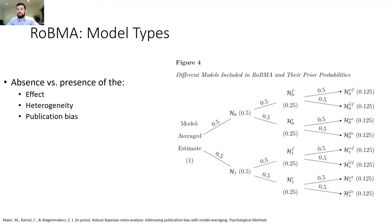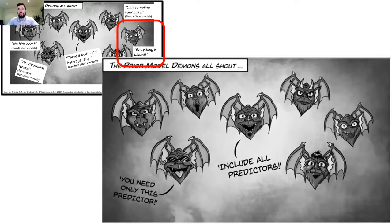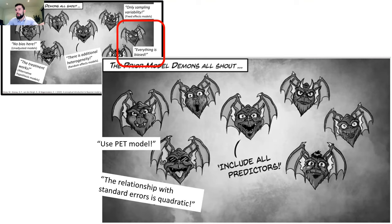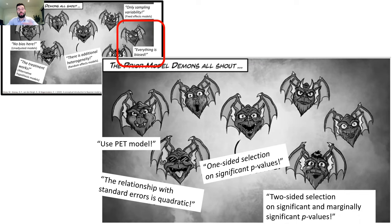As I said previously, there are different ways to adjust for publication bias. So in our illustration, one model type can be represented in many ways — it's turtles all the way down. We specify more models that represent this one type. For example, we can specify the PET model as one way of adjusting for publication bias, the PEESE model, or different weight functions — for example, one-sided selection on significant p-values, or selection on marginally significant and non-significant p-values with two-sided p-values, and other variations.